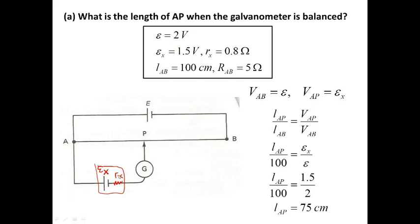Why is only EX included, and not RX? Because the galvanometer is balanced — when the galvanometer is balanced, there is no current. So RX: the voltage drop IR equals zero when current is zero. That's why the voltage VAP is only equal to EX alone. So VAP equals EX because IR equals zero.